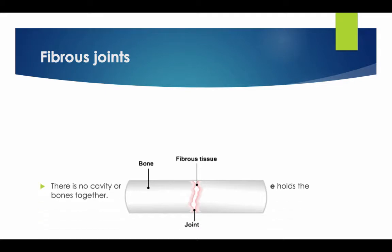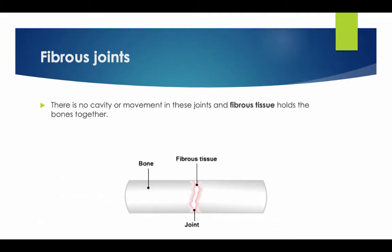Looking at the fibrous joint in more detail: there is no cavity or movement in these joints, and fibrous tissue holds the bones together. As you can see from the diagram, there are two bones with the fibrous tissue in between. For example, the cranium.